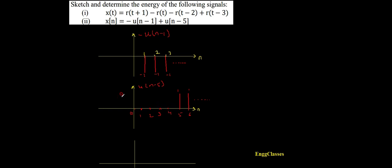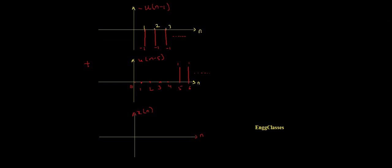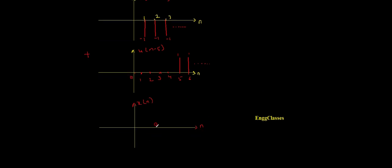Now I need to add these two signals to get the final signal x of n. Let me write the possible limits — there is nothing at the negative axis so I will not consider anything there. Adding step by step with limits 1, 2, 3, 4, 5, 6, 7: at position 0 there are no signals so it is 0. At position 1, the first signal is minus 1 and I have nothing from the second, so minus 1 plus 0 gives minus 1.